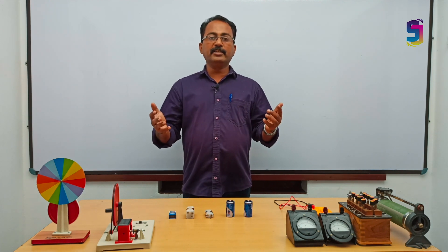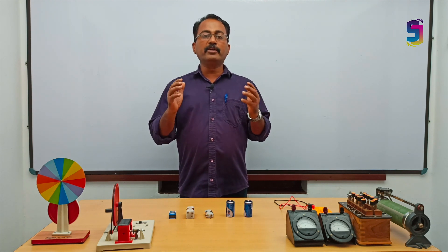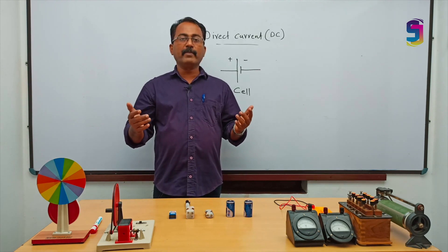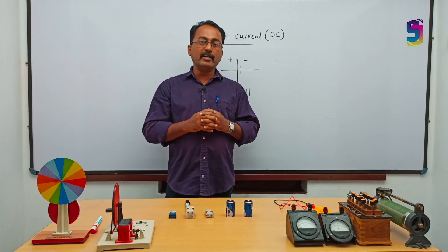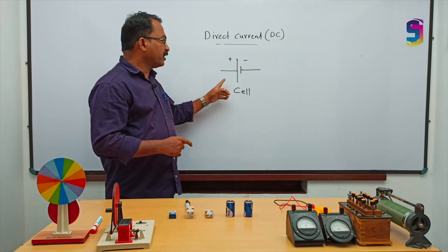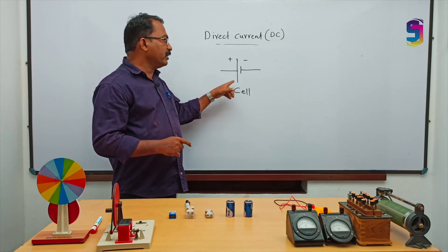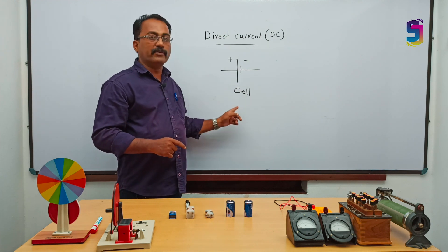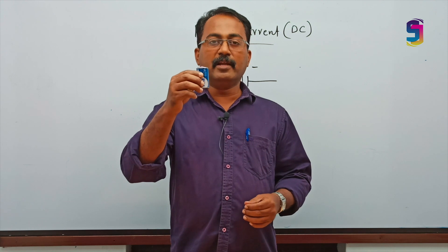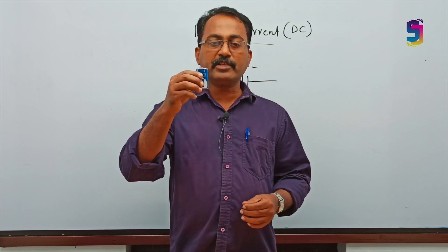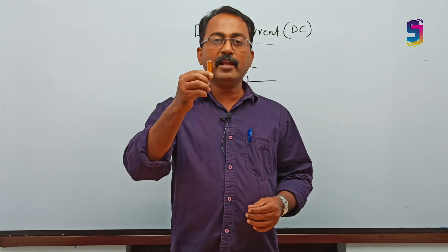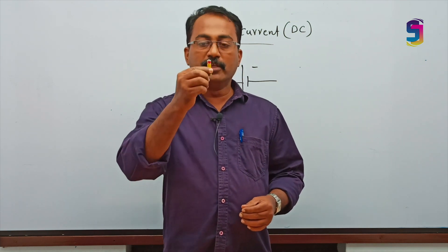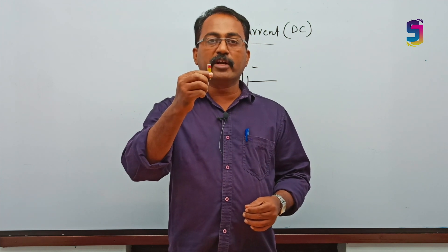Electric current is of two types: direct current or DC, or alternating current or AC. The current which we get from a cell is direct current or DC. The big line indicates the positive terminal and the small line indicates the negative terminal of the cell. This is a dry cell which we use in torches, clocks, and remote controls.